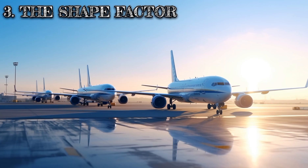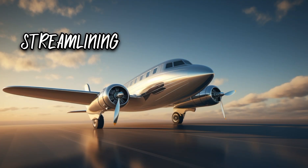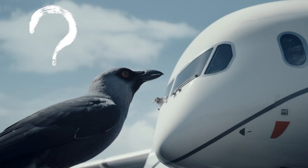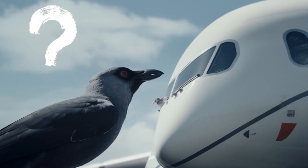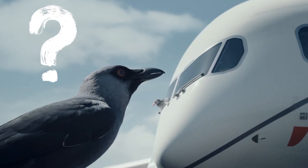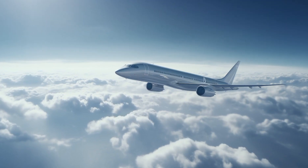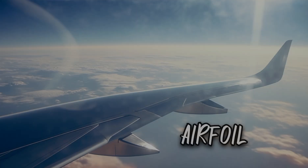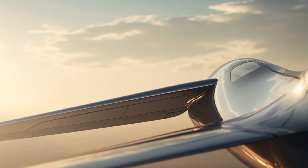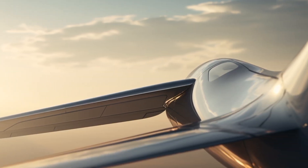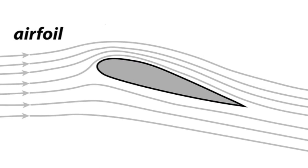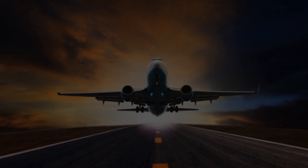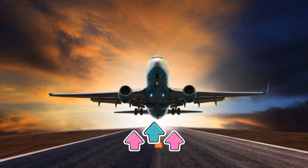The shape factor. Streamlining: ever noticed how planes and birds have a similar shape? It's because a streamlined shape helps reduce drag. Airfoil is a fancy name for the shape of a wing — it's curved on the top and flatter on the bottom. This shape helps produce lift.